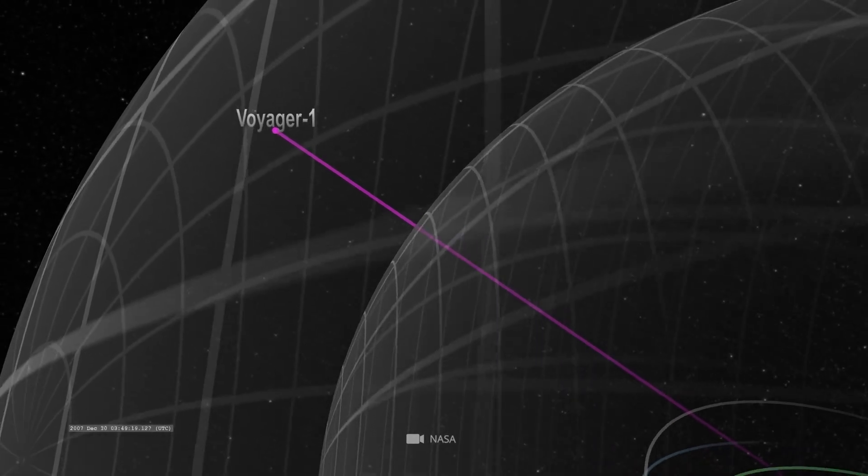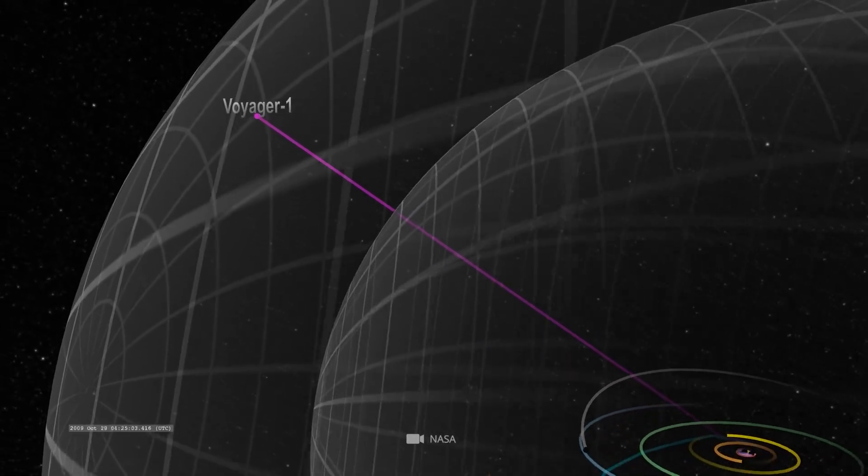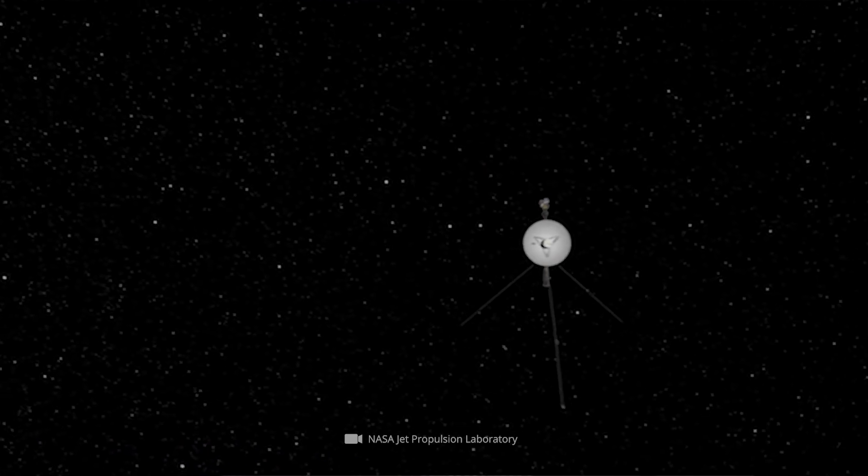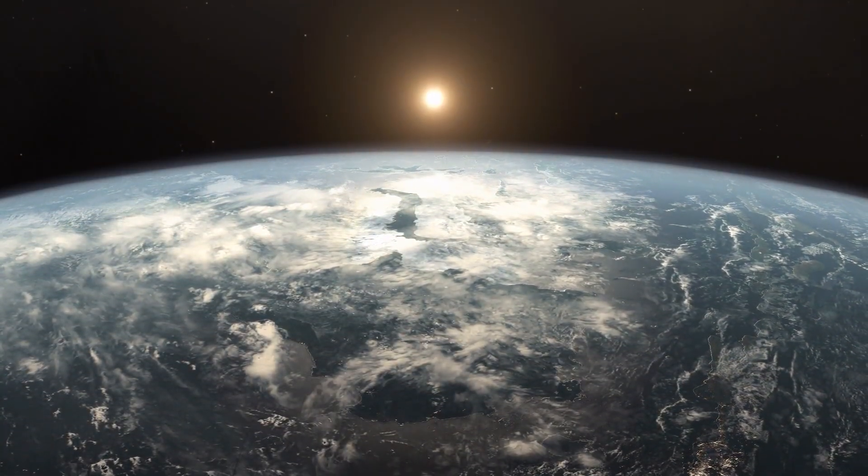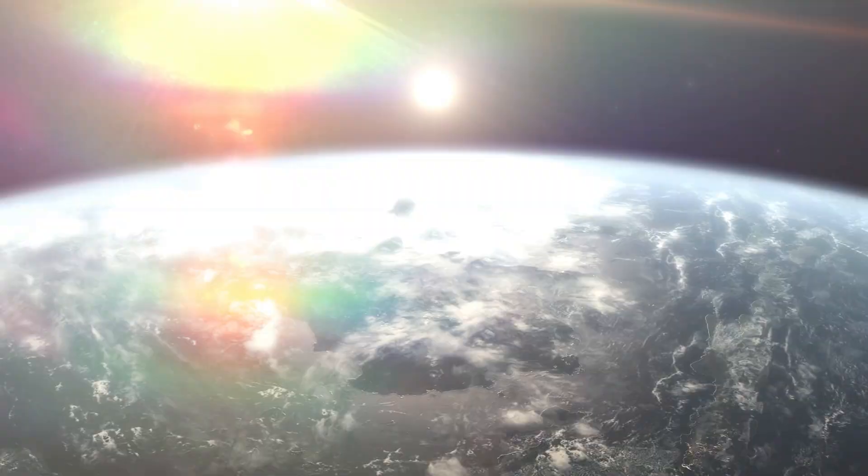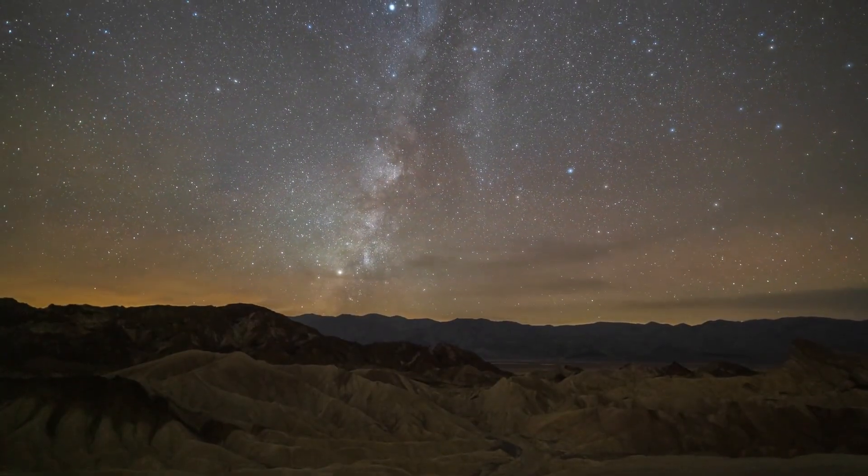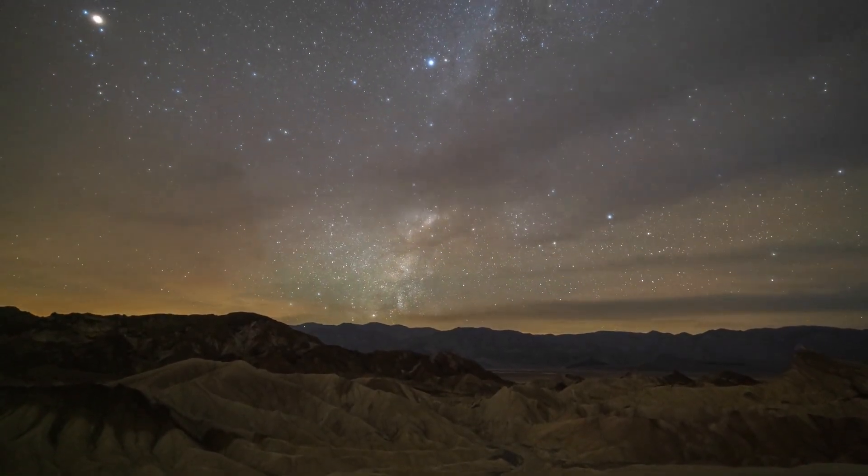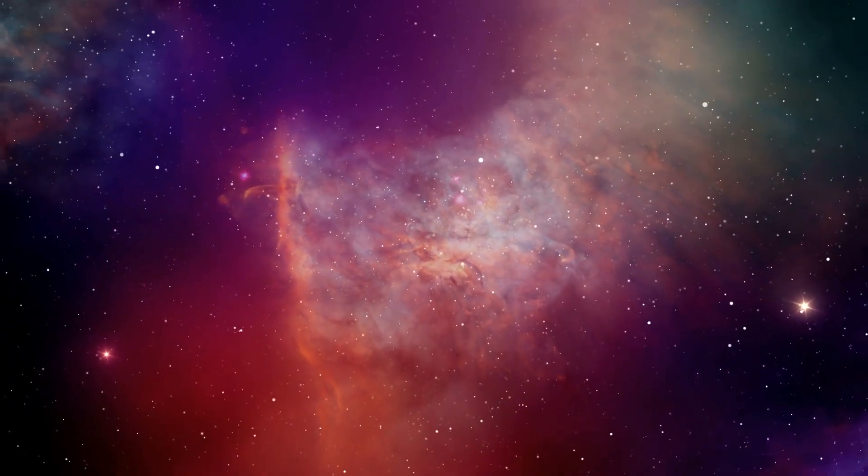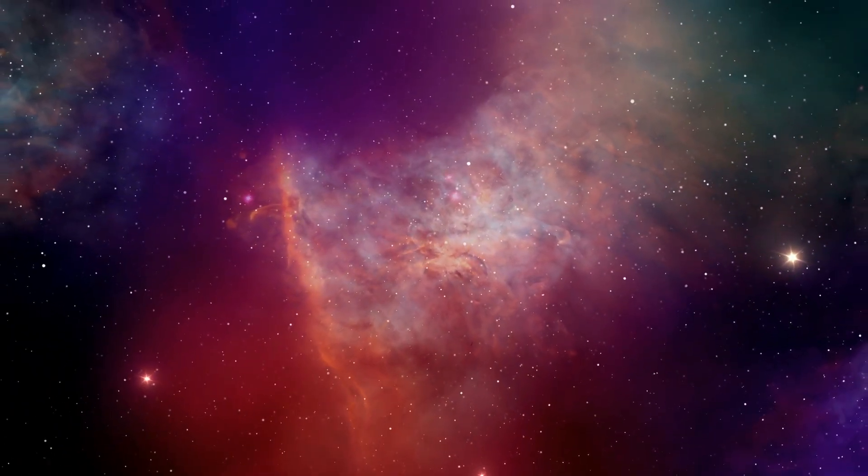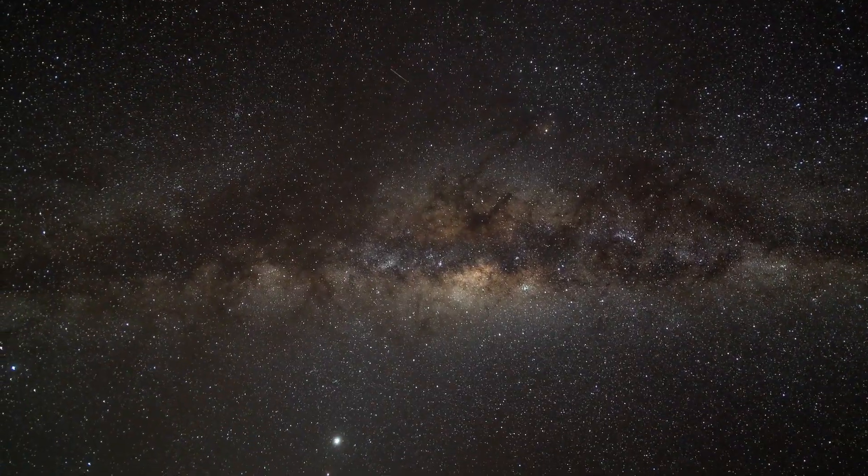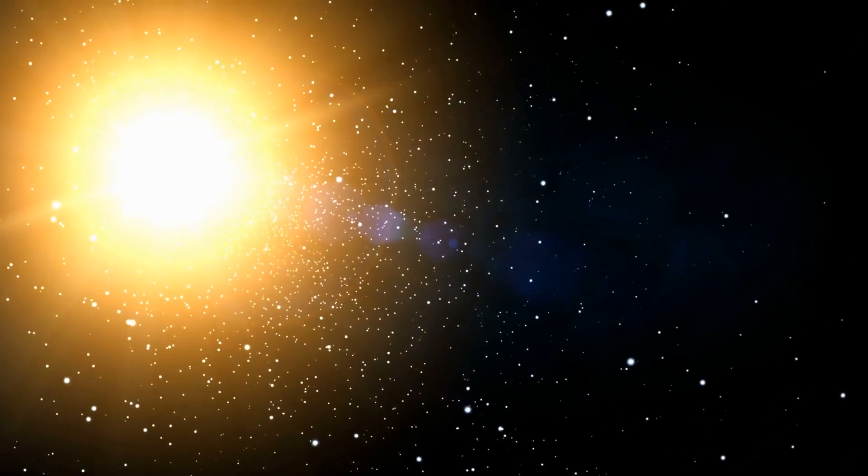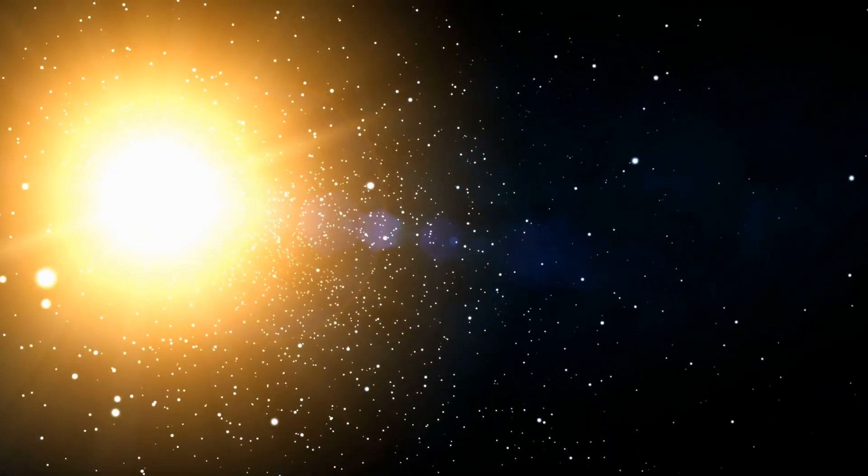While Voyager 1 had already reached interstellar space in 2012, its sister followed about six years later. But what findings accompanied this technical breakout from the solar system? Fundamentally, the gist of the information gathered to date can be summarized as follows: interstellar space is even stranger than previously thought. In order to be able to classify the exciting observations correctly, we should first take a look at the interplay of solar winds and interstellar medium.